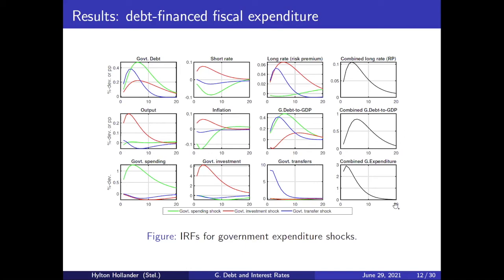The right column shows those combined effects. What's interesting is that these net effects, if I weight them by the relative shares of the spending components as a share of the total, come out very close to that reduced form measure — just using debt or deficits to identify the effect of debt on interest rates.